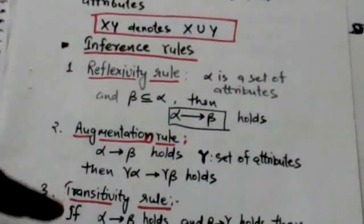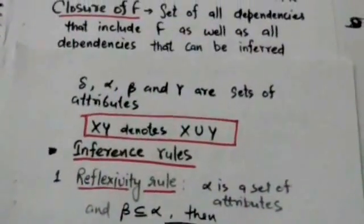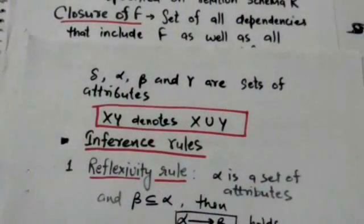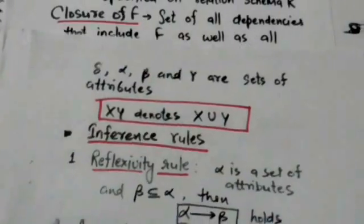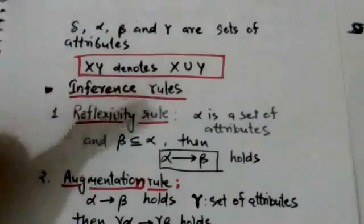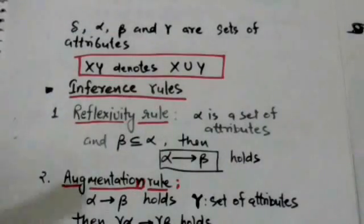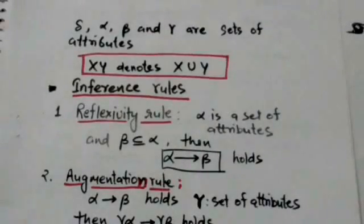The following six rules are inference rules for functional dependencies. Here alpha, beta, gamma, and delta are sets of attributes, and if X and Y are sets of attributes then XY denotes X union Y.